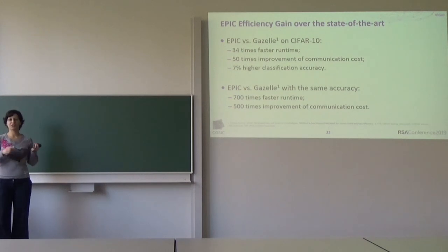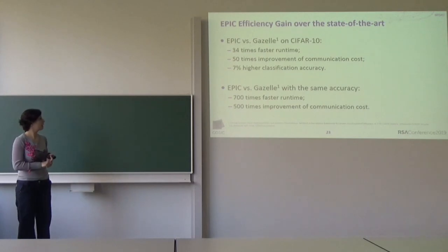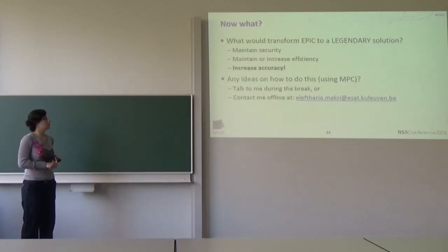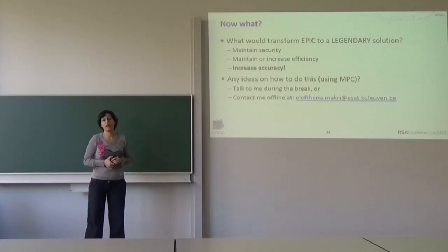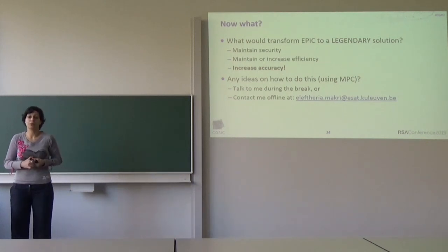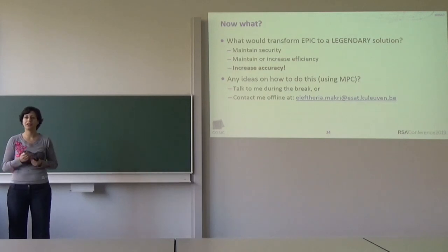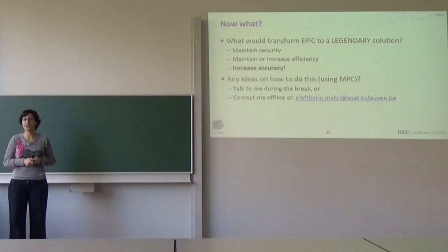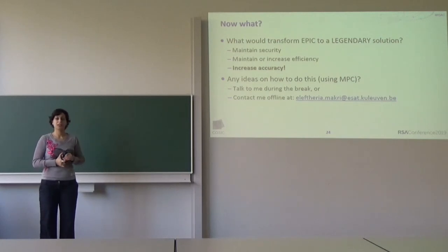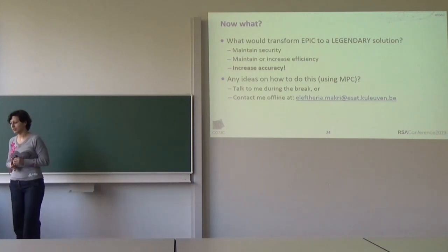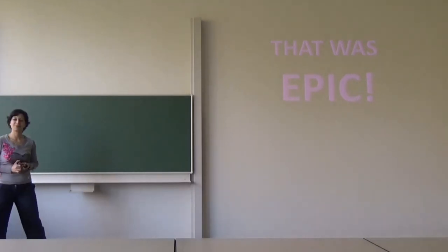So we have a secure, efficient, and reasonably accurate solution. With active security and dishonest majority we are good on two of the three aspects, but we still need to focus on increasing accuracy to compete with plaintext models. The accuracy metrics shown are comparisons between private classifiers, but a non-private classifier of course achieves higher accuracy, and in certain scenarios a 10-12% chance of a wrong label may not be acceptable. The question for future work is how to make the private solution more accurate while maintaining this security and efficiency level.